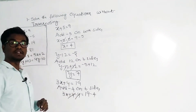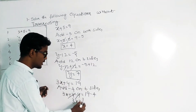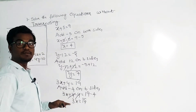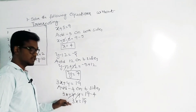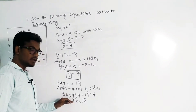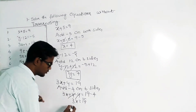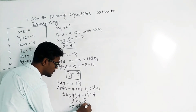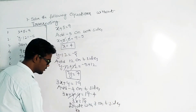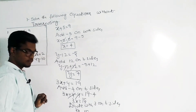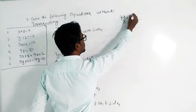3x plus 4 minus 4 equals 19 minus 4; plus 4 and minus 4 cancel, so 3x equals 15. Now we remove the 3 by dividing both sides by 3. 3x divided by 3 equals 15 divided by 3; the 3s cancel, giving x equals 5.